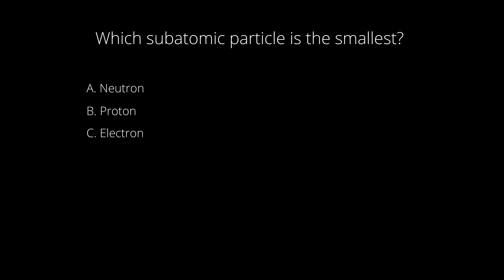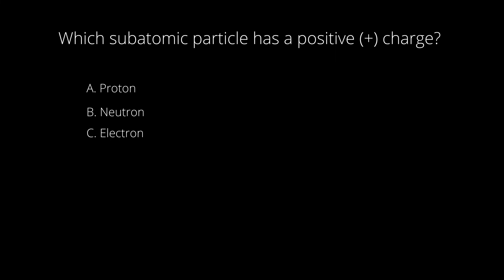Question number three: what subatomic particle is the smallest? Is it A, neutron; B, proton; or C, electron? If you chose C, electrons — you are correct. And the final question: what subatomic particle has a positive charge? Is it A, proton; B, neutron; or C, electron? If you chose A, proton — you are correct.